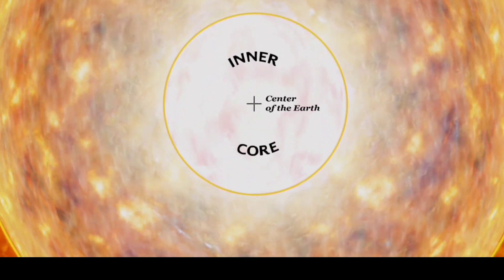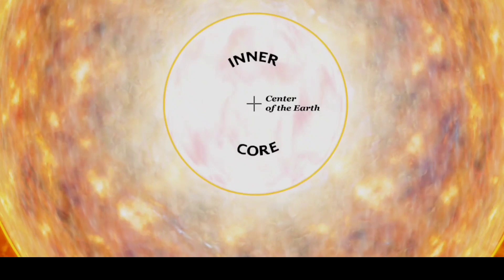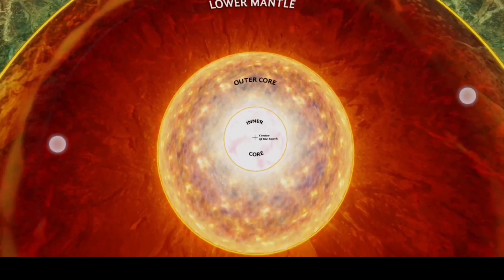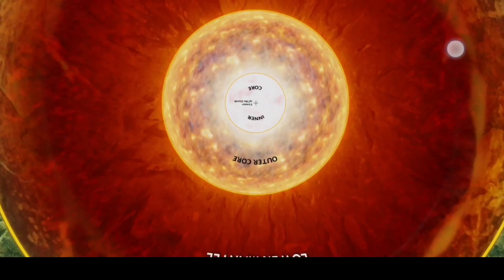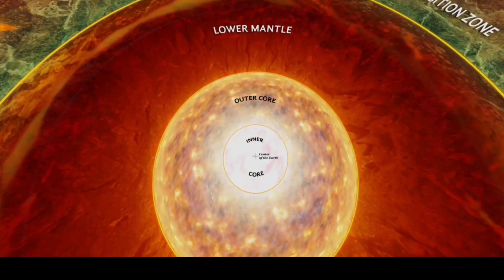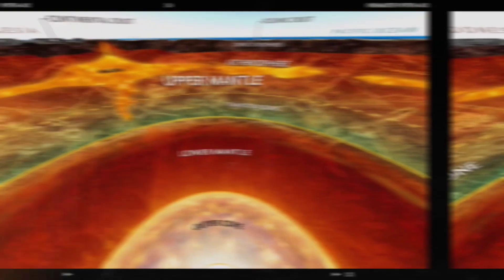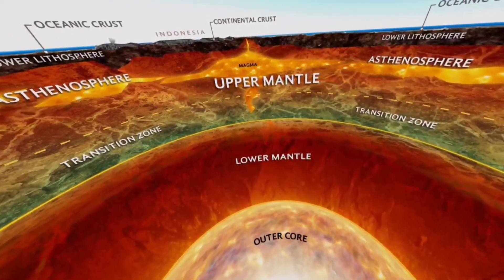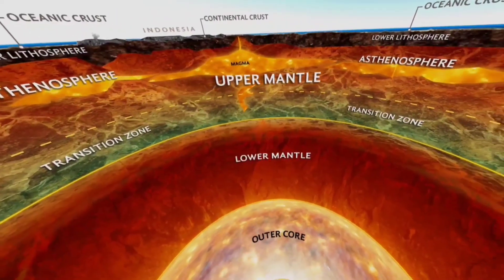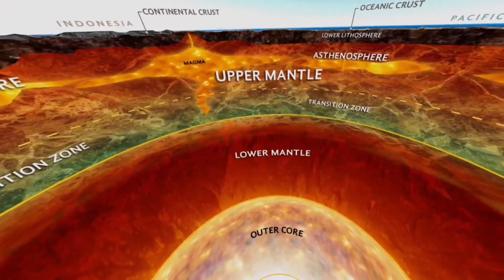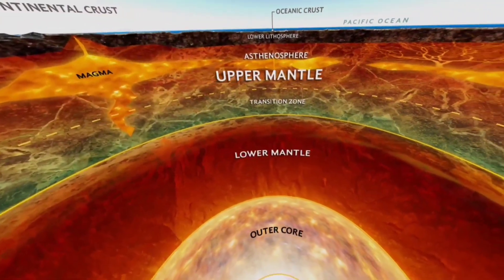The outer core is surrounded by nickel and ferrous metals in a molten state, because the core experiences the highest temperature on Earth — approximately 5,000 degrees — so metals cannot remain in solid state. However, the inner core has a solid layer of iron atoms, because of the greatest gravitational force.